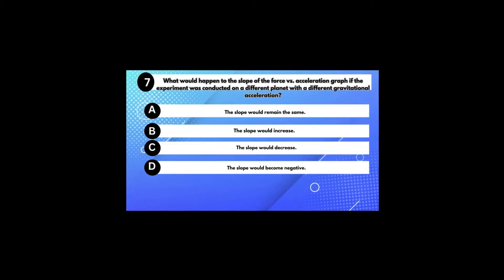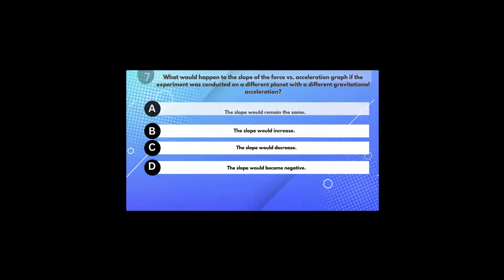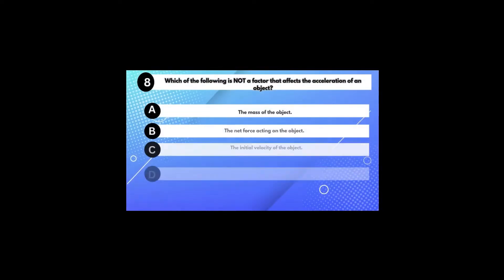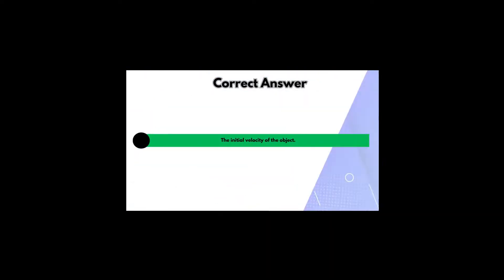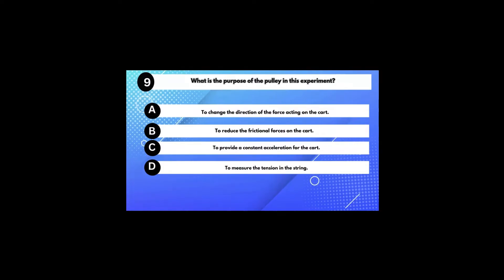What would happen to the slope of the force-versus-acceleration graph if the experiment was conducted on a different planet with different gravitational acceleration? Answer A: The slope would remain the same. Which of the following is not a factor that affects the acceleration of an object? Answer C: The initial velocity of the object. What is the purpose of the pulley in this experiment? Answer A: To change the direction of the force acting on the cart.